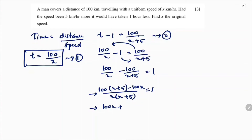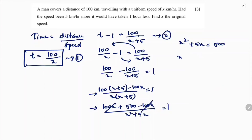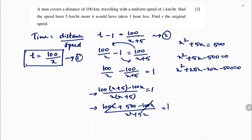Expanding the numerator: 100x plus 500 minus 100x, over x squared plus 5x, equals 1. The 100x terms cancel, leaving 500 over (x squared plus 5x) equals 1. Cross-multiplying gives x squared plus 5x equals 500, so x squared plus 5x minus 500 equals 0. Factoring 500 as 25 times 20: we write 25x minus 20x.